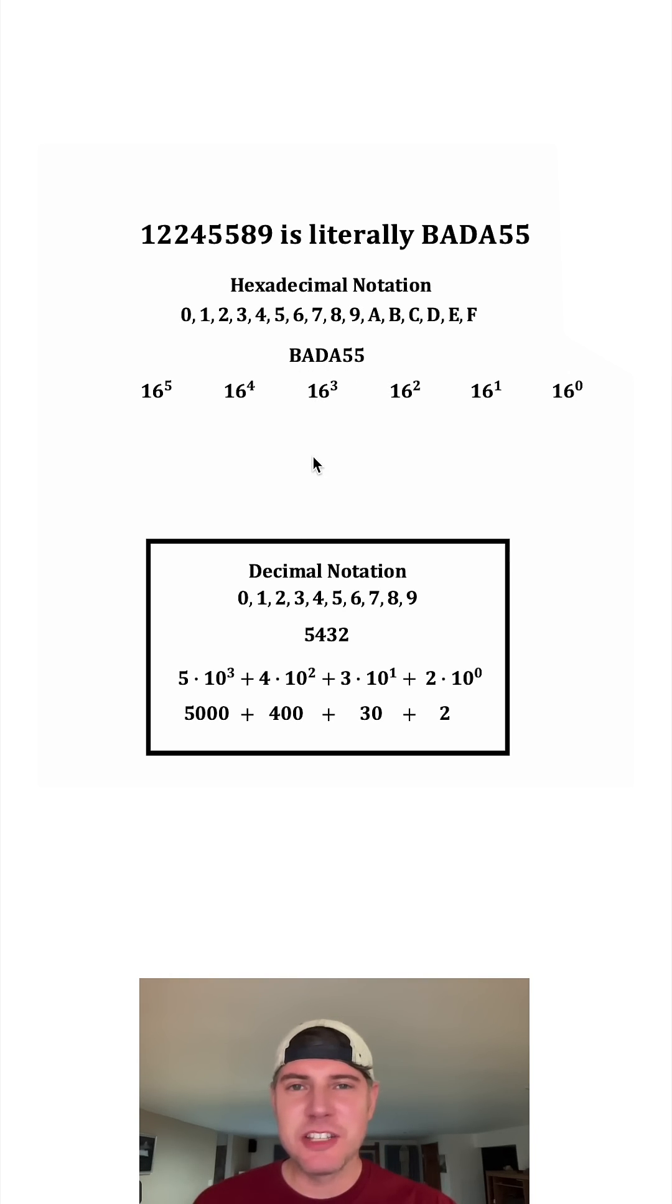We can substitute each of the digits into their corresponding place values. And we can make the B an 11, the A a 10, the D is a 13, and the A is a 10. The 5 is a 5, and the 5 is a 5.